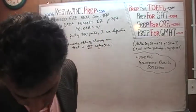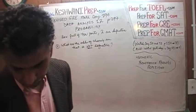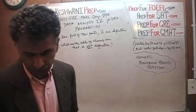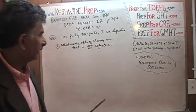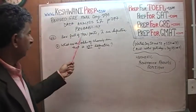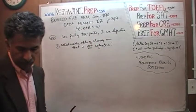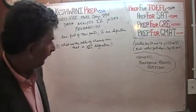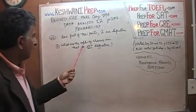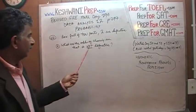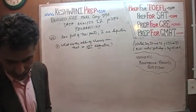It says: in a box full of 10 electrical parts, 2 are defective. The question simply is, what are the odds of choosing one that is not defective?